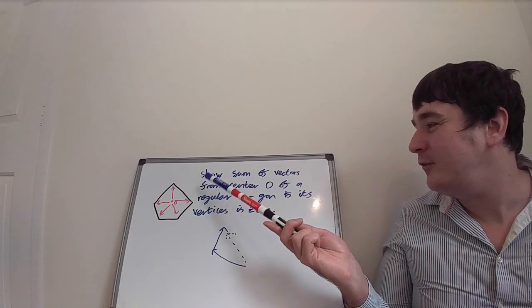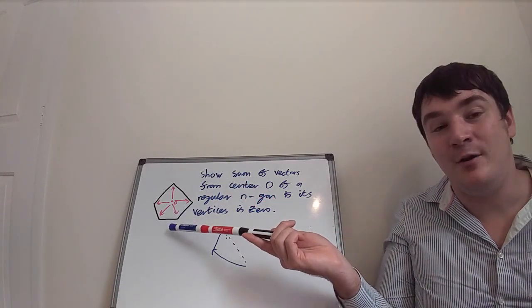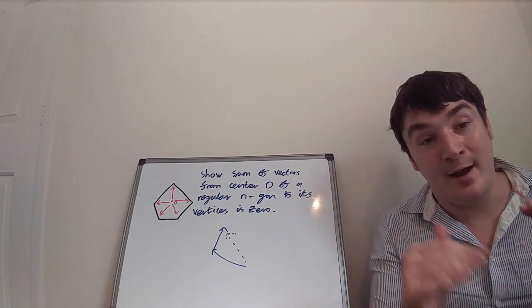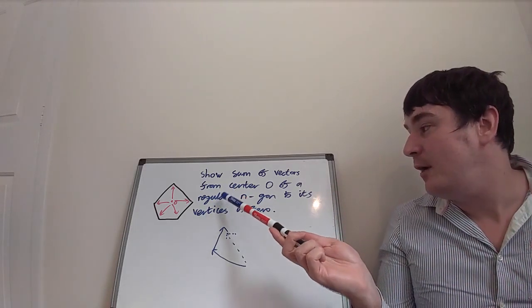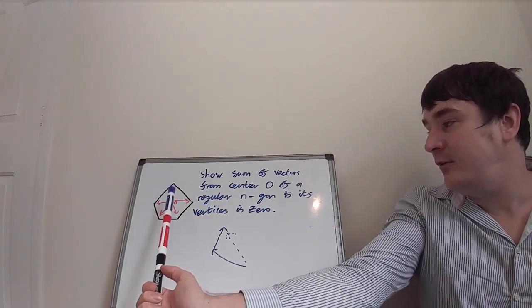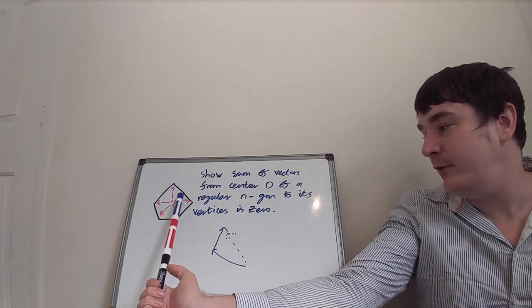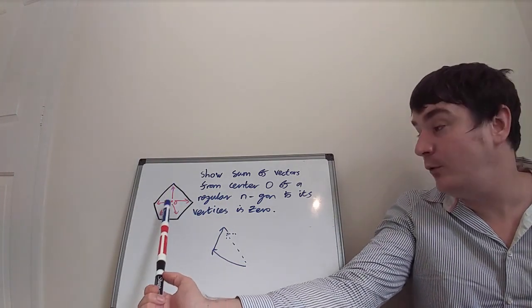Here's the problem. We have a regular n-gon - that's an n-sided symmetric polygon. We want to show that the sum of the vectors from the center to the vertices equals zero.